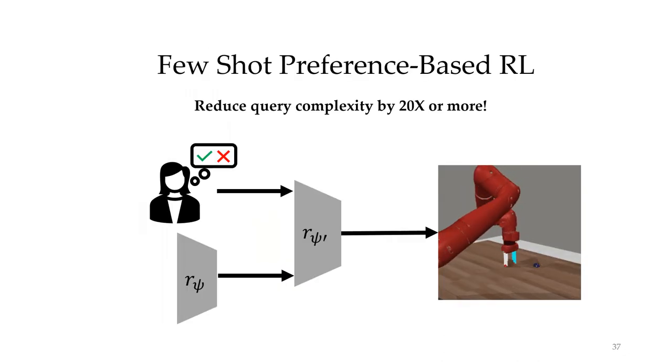In summary, we introduced few-shot preference learning for human-in-the-loop RL. We showed that by pre-training on multi-task data, we can drastically reduce the number of queries needed for human-in-the-loop RL by 20 times or more. This enables us to actually learn policies from real human feedback.